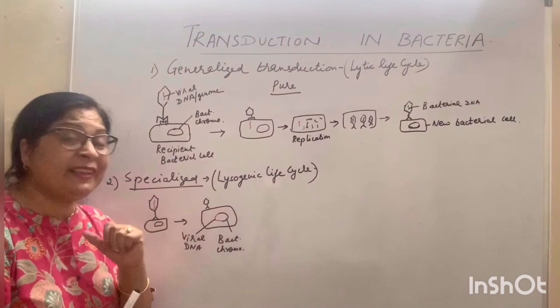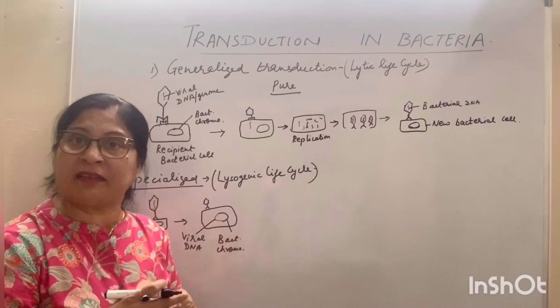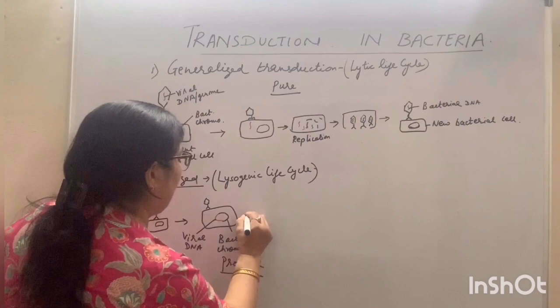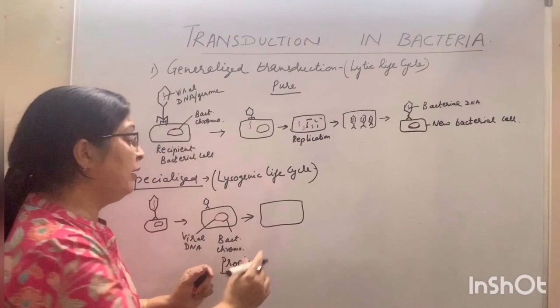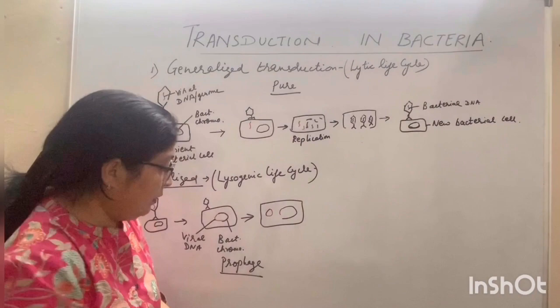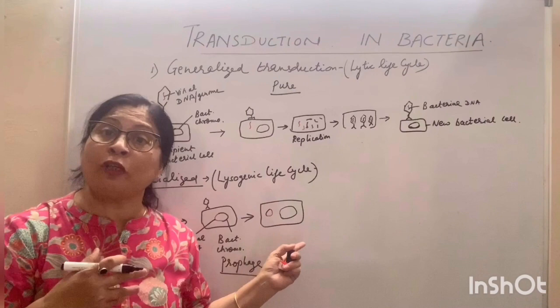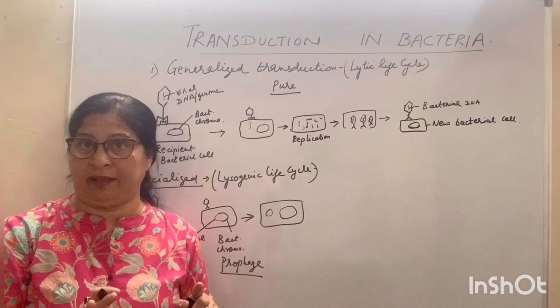The condition when viral DNA and bacterial chromosome are attached together is known as prophage. Sometimes, this viral DNA gets detached from the bacterial chromosome. However, just as we have seen with prime cells, when it detaches, a small amount of bacterial chromosome remains attached to the viral DNA — it is not pure. This is similar to how a prime plasmid carries some bacterial chromosome.